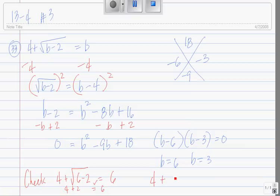How about 4 plus radical 3 minus 2 equals 3. Does that work? No. 4 plus radical 1 equals 3. This does not work. So radical 3, sorry, b equals 3 does not work. So our only solution is b equals 6.